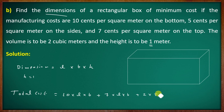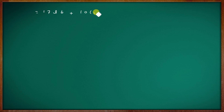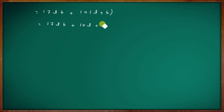The total cost equals: 10LB (bottom) + 7LB (top) + 2×5(LH + BH) (sides). With h = 1, this simplifies to: 17LB + 10L + 10B.